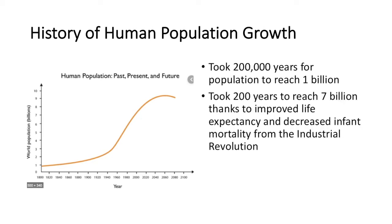So we grew at a very, very high rate. It took us only 200 years from 1800 to reach that 7 billion mark. And why was that possible?